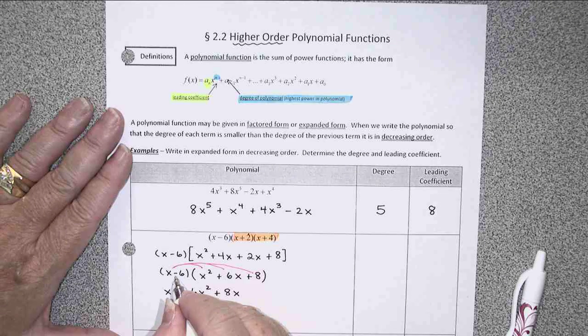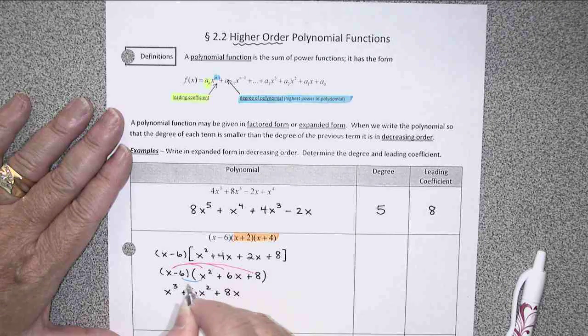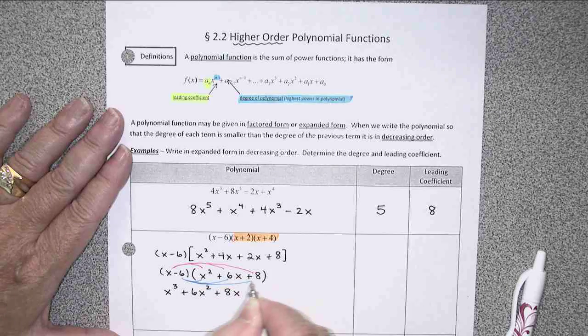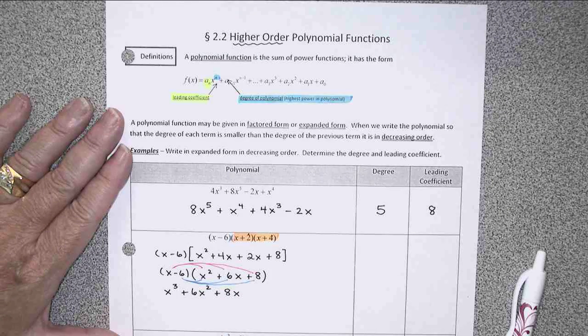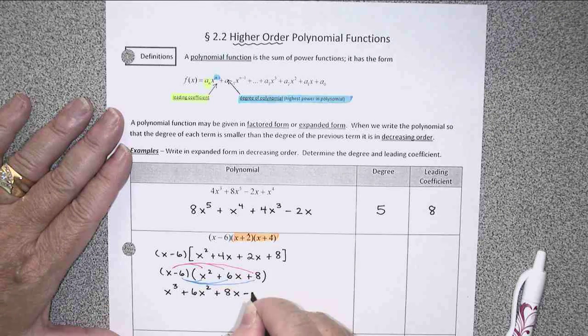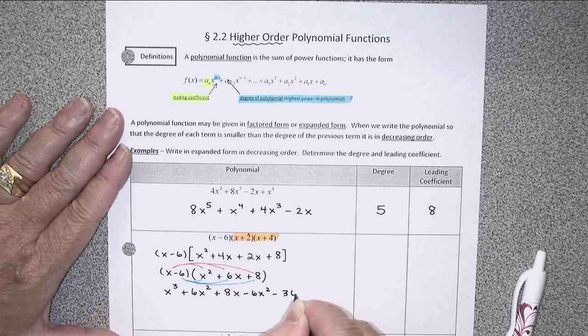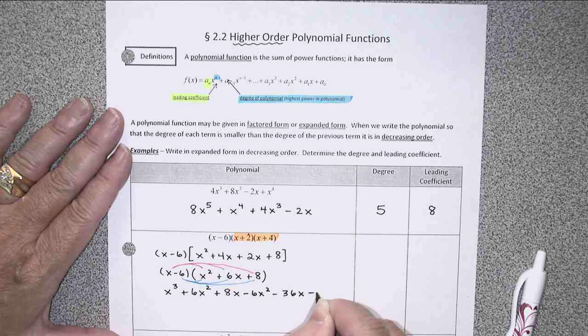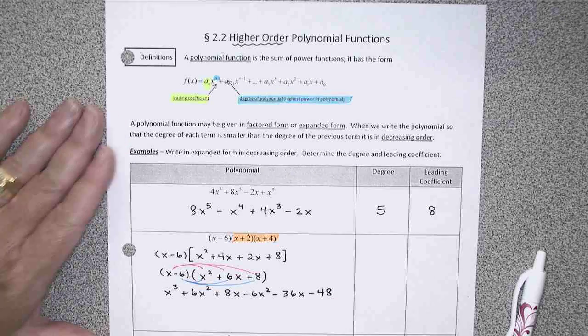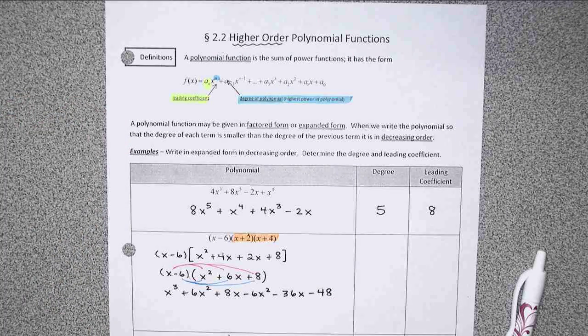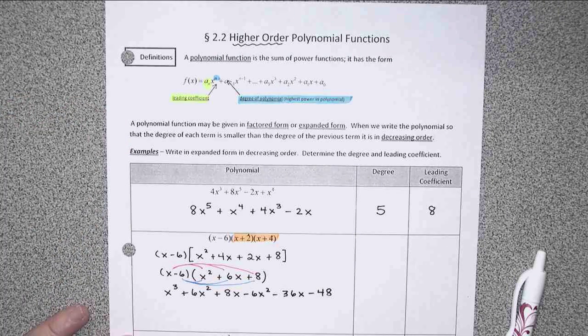And then I'm going to distribute this negative 6, also to all three terms. Which gives me negative 6x squared, negative 36x, and negative 48.